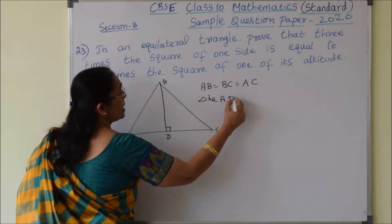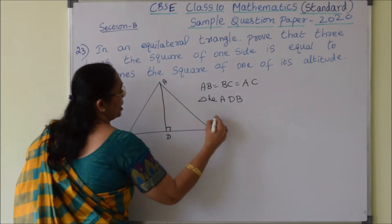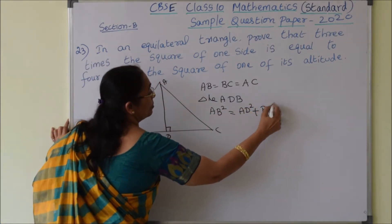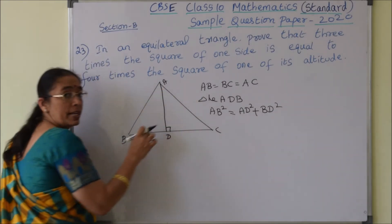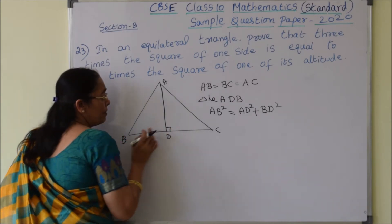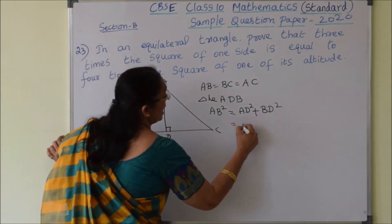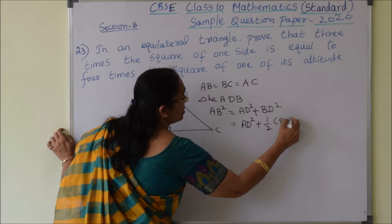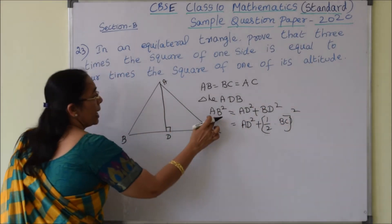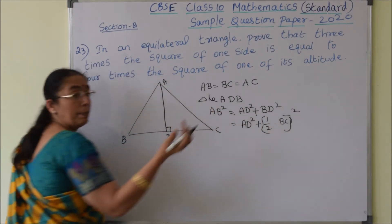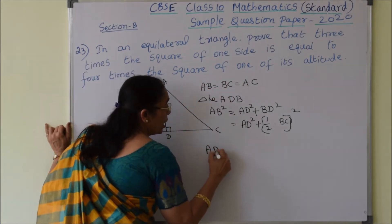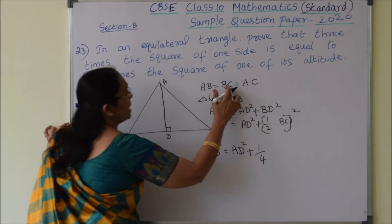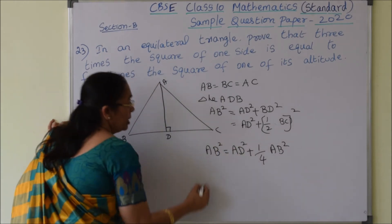From triangle ADB, by Pythagoras theorem, AB square equals AD square plus BD square. In an equilateral triangle, the altitude is also a median, so it divides the base into two equal parts. Therefore BD equals half of BC, so we write AB square equals AD square plus one-half BC whole square, which is AD square plus one-fourth BC square. Since all three sides are equal, BC can be replaced by AB, giving AB square equals AD square plus one-fourth AB square.